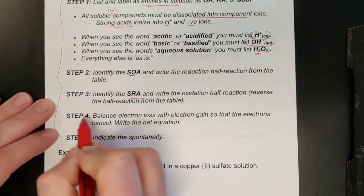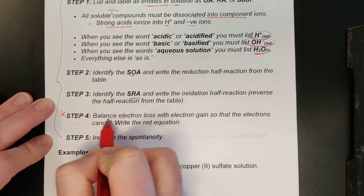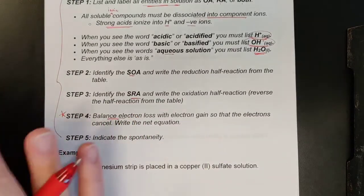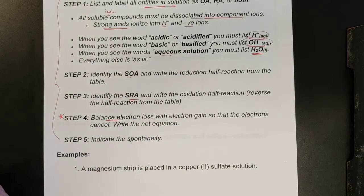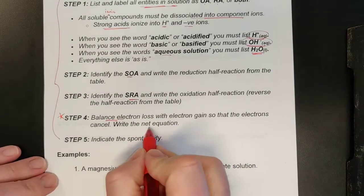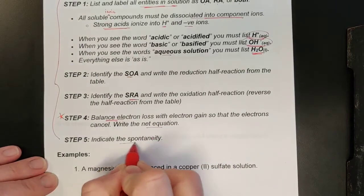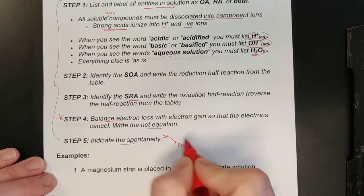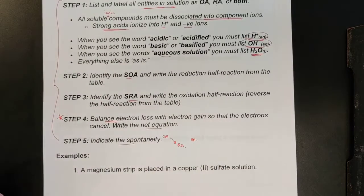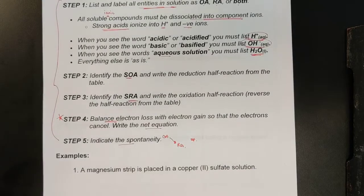Once we do that, we use the electrons to balance the equation. Electrons lost in oxidation must equal the electrons gained in reduction, so we may have to do some multiplying in order to make that work. Then we can write our net equation and we can see if the OA is above the RA or not and figure out if it's spontaneous.